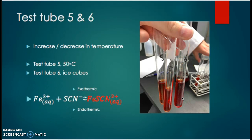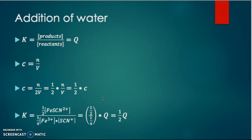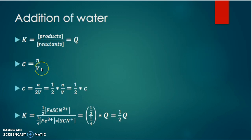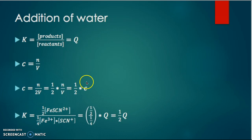Afterwards, we wanted to see what an addition of water would do to the chemical equilibrium — we tried to double the volume. The concentration formula is C = n/V, so when we double the volume, the concentration becomes n/(2V), which equals one half times the original concentration.